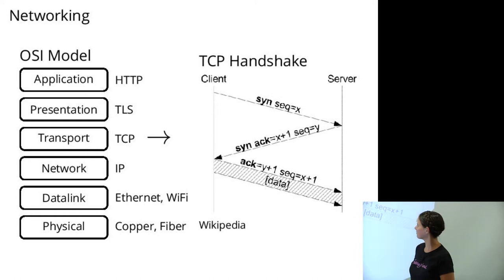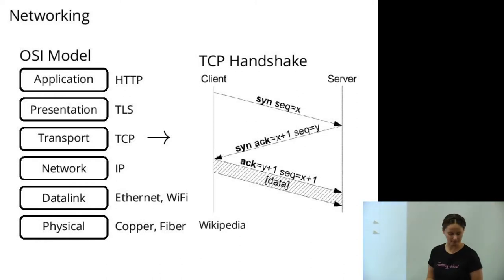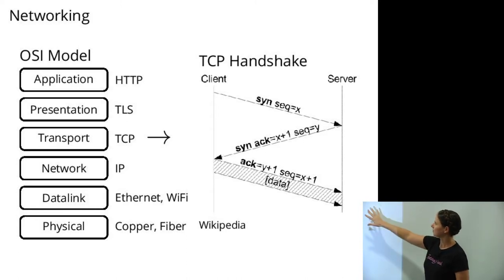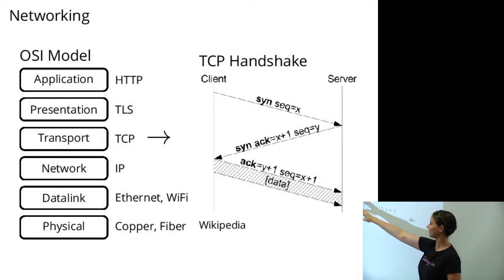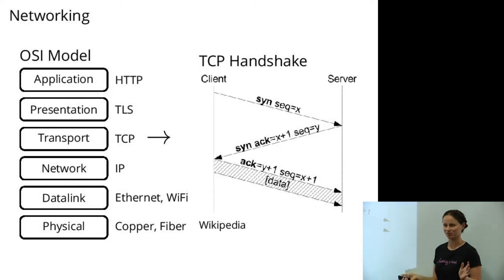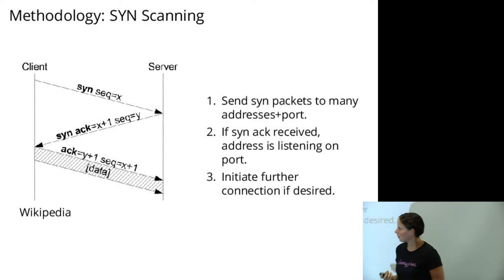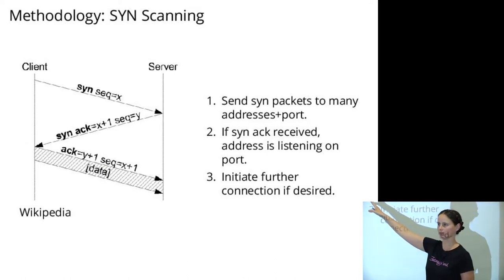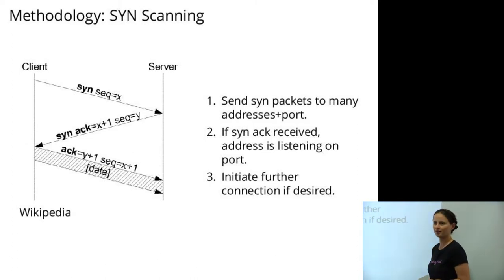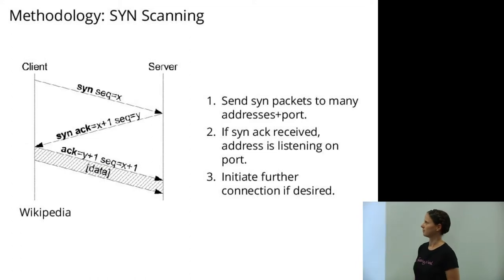If we want to scan the internet we need to understand a little bit about how to do that. If you are initiating a TCP connection, step number one is the TCP handshake: the client sends a SYN packet, the server responds with a SYN-ACK, and the client responds with an ACK — the three-step handshake. This suggests a particular methodology: if you want to find out who has a particular port open, you can just send a single SYN packet, and if they respond with a SYN-ACK you know they're listening. This is the basis of SYN scanning.